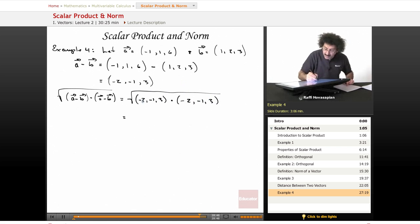That's equal to -2 times -2 is 4, -1 times -1 is 1, 3 times 3 is 9. Square root of 4 plus 1 plus 9, which is 14. So we end up with radical 14. Therefore, the norm of A minus B is equal to radical 14.